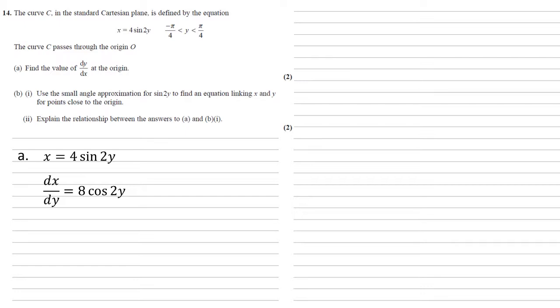We want dy by dx though, so we just flip this upside down, so dy by dx equals 1 over 8 cos 2y. We want to find the value at the origin, so at (0,0), we're just going to put y in as 0. So dy by dx equals 1 over 8 cos 0, so it equals an eighth.